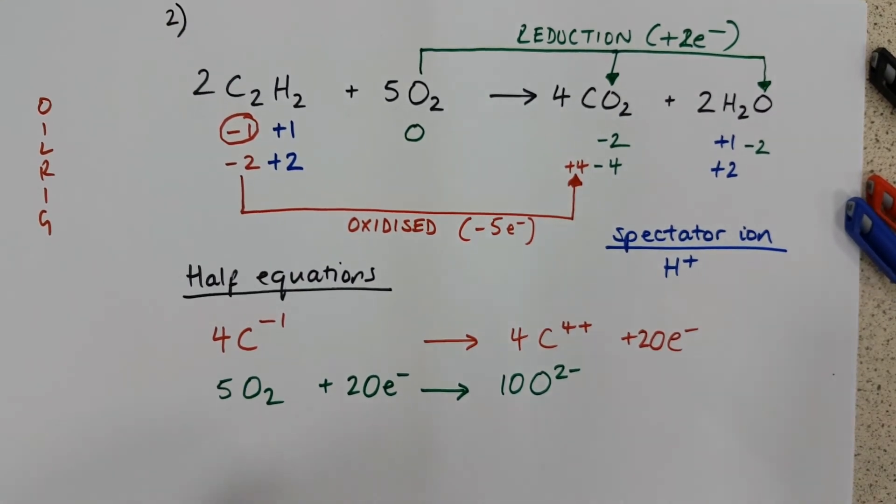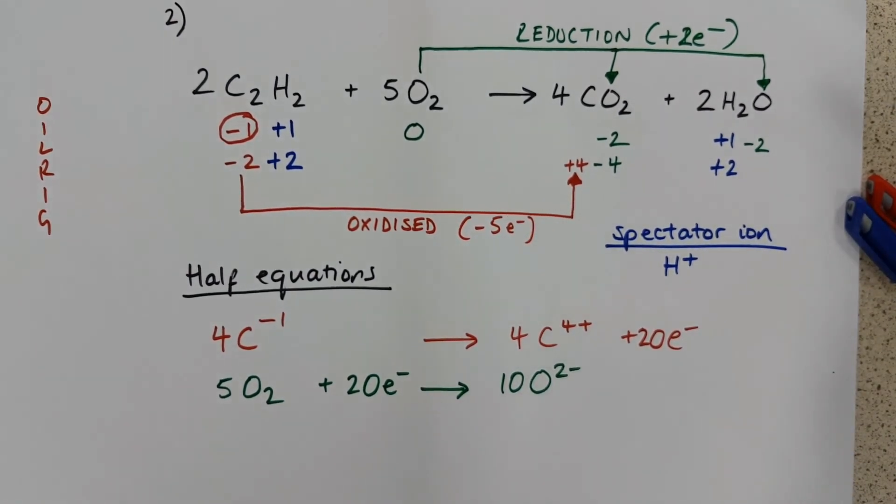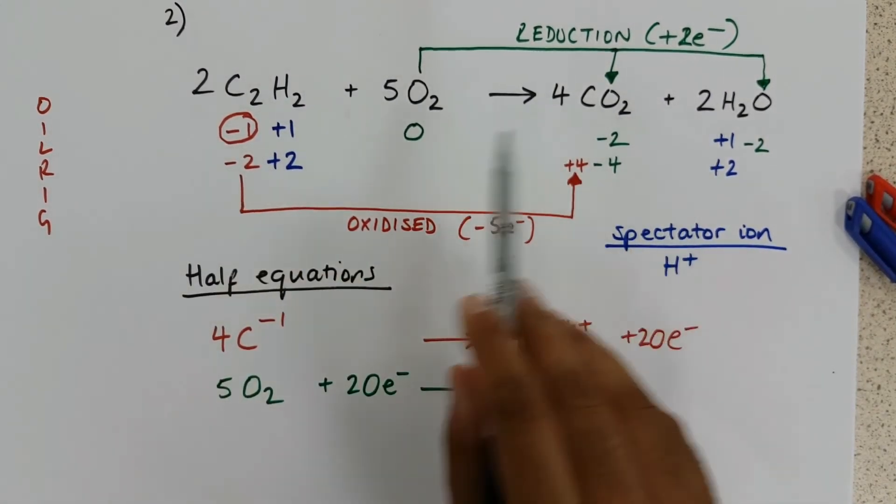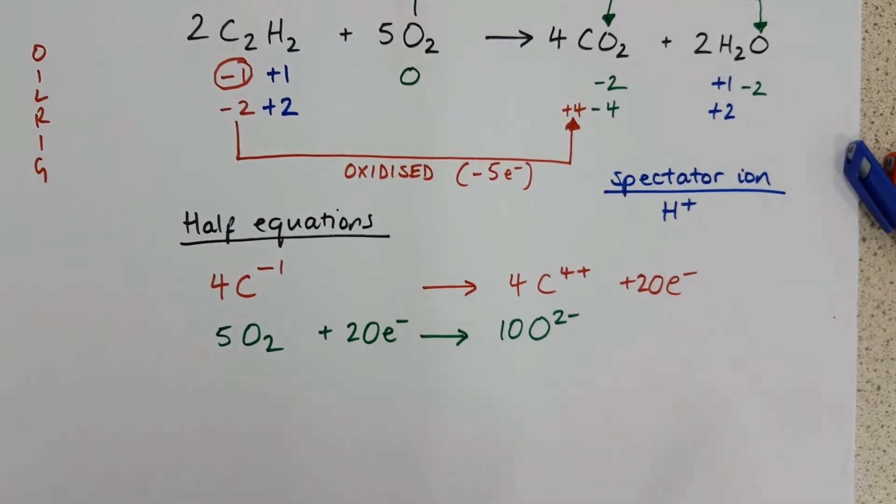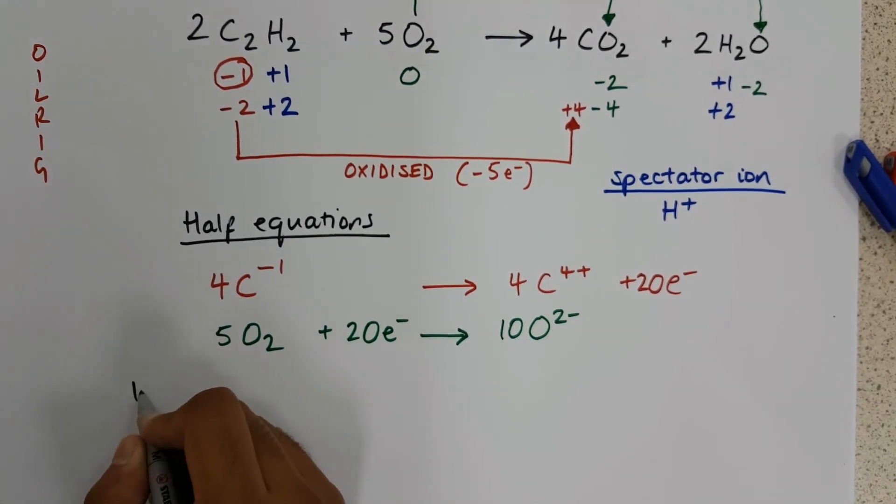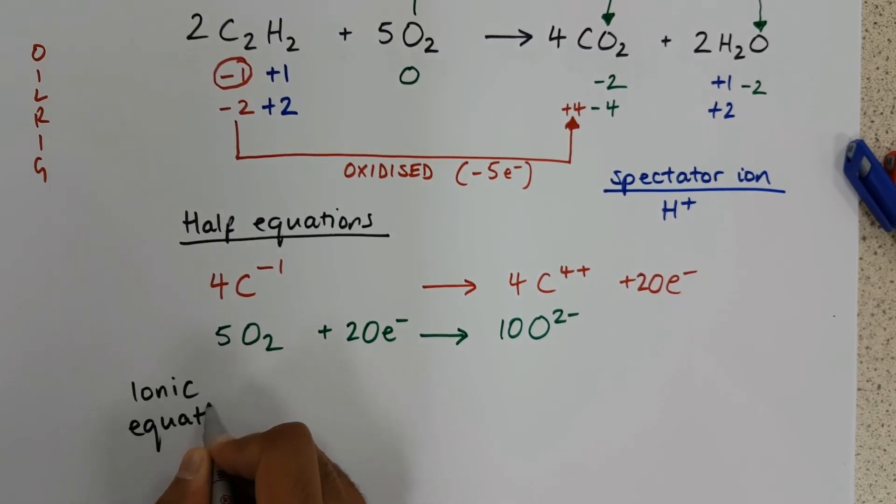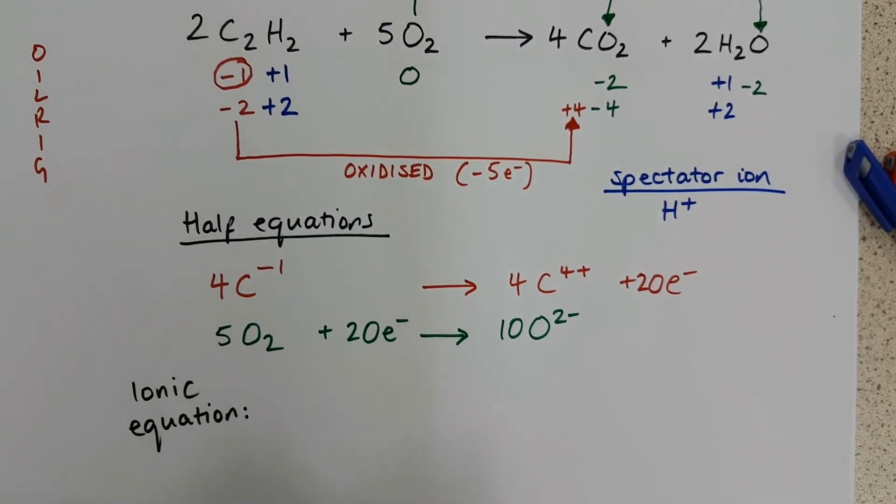Those are the half equations. You notice we've ignored the hydrogen, because it is spectating, it's not involved. And the final step is to combine the two of these into our ionic equation.